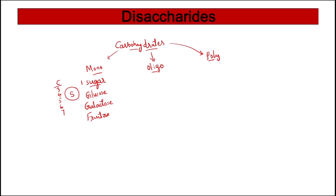These three - glucose, galactose, and fructose - have six carbons, so six carbon sugars are called hexoses.